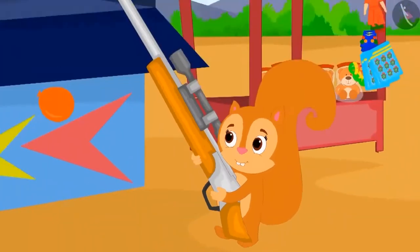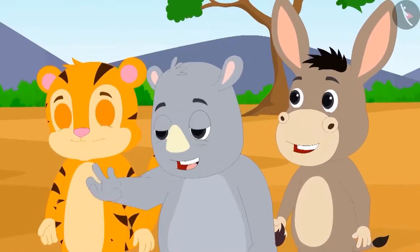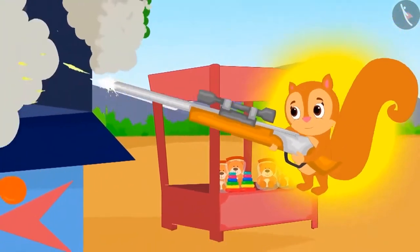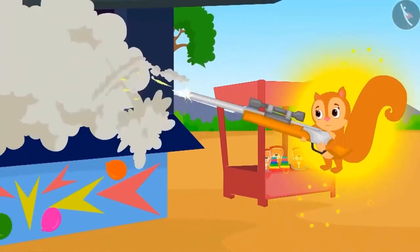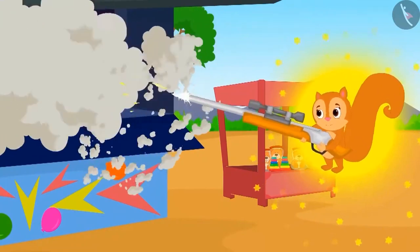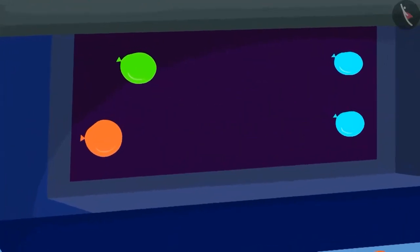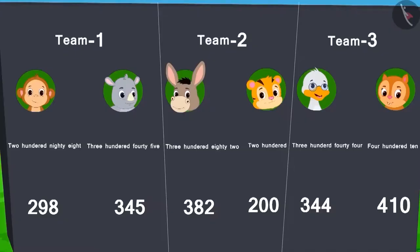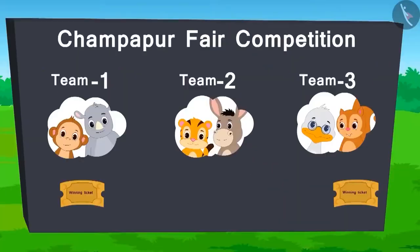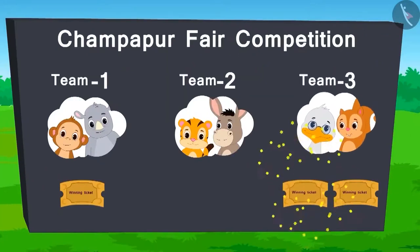The gun is bigger than Chanda and everyone started laughing. Suddenly there were loud noises of bursting balloons. Everyone was astonished — Chanda was firing the gun like a machine gun and continuously bursting balloons. Once again there was a magical glow visible around Chanda. The smoke cleared and the counting began: Chanda burst 410 balloons! Team 3 wins the ticket for this round.